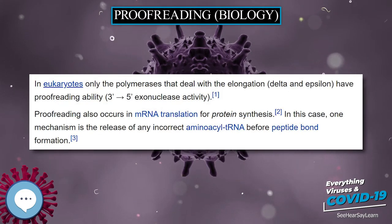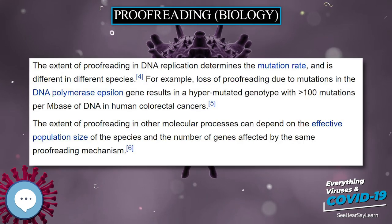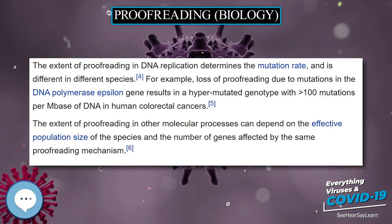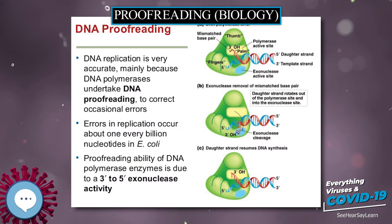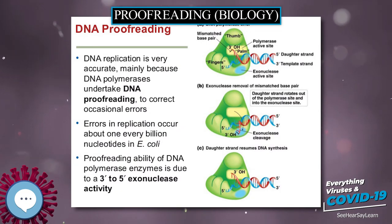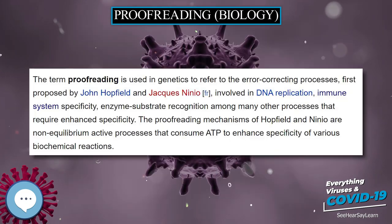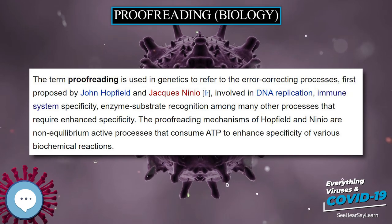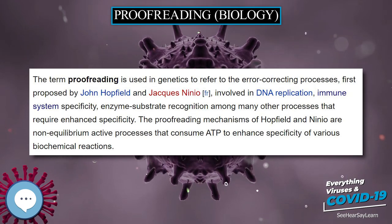When an incorrect base pair is recognized, DNA polymerase reverses its direction by one base pair of DNA and excises the mismatched base. Following base excision, the polymerase can reinsert the correct base and replication can continue.